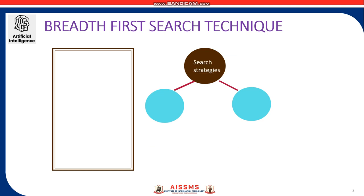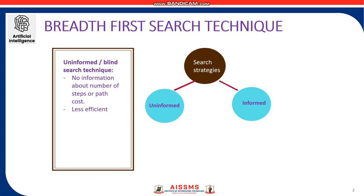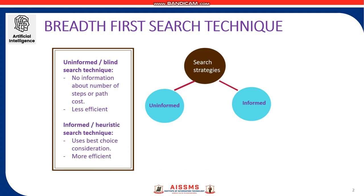There are basically two types of search techniques in AI. One is the uninformed search strategy and the other is informed search strategy. Uninformed search, or blind search, or brute force method are the different names for this search technique. The term means that the AI agents have no information about the number of steps or the path cost from the current state to the goal. All they can do is distinguish a goal state from a non-goal state. The search algorithm produces the search tree without using any domain knowledge, which is brute force in nature. In contradiction to this is the strategy that uses best choice consideration and is called informed search strategy or heuristic search.